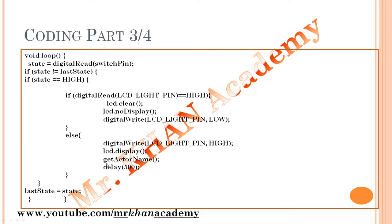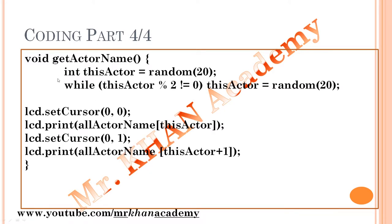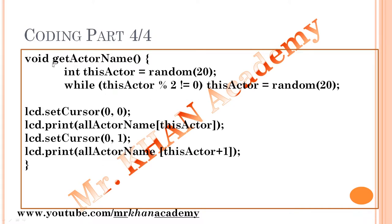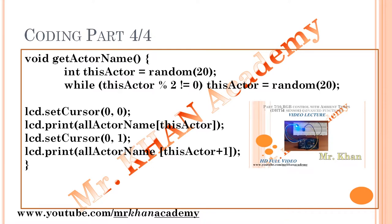Now let's look at the `getActorName()` function — a user-defined function I created at the end of the `void loop()`. The function name must match exactly when called. Inside this function, I define one integer variable `thisActor` and store a random number between 0 and 20 using the `random()` function. For more details on the `random()` function you can check Part 7, where advanced functions are covered.